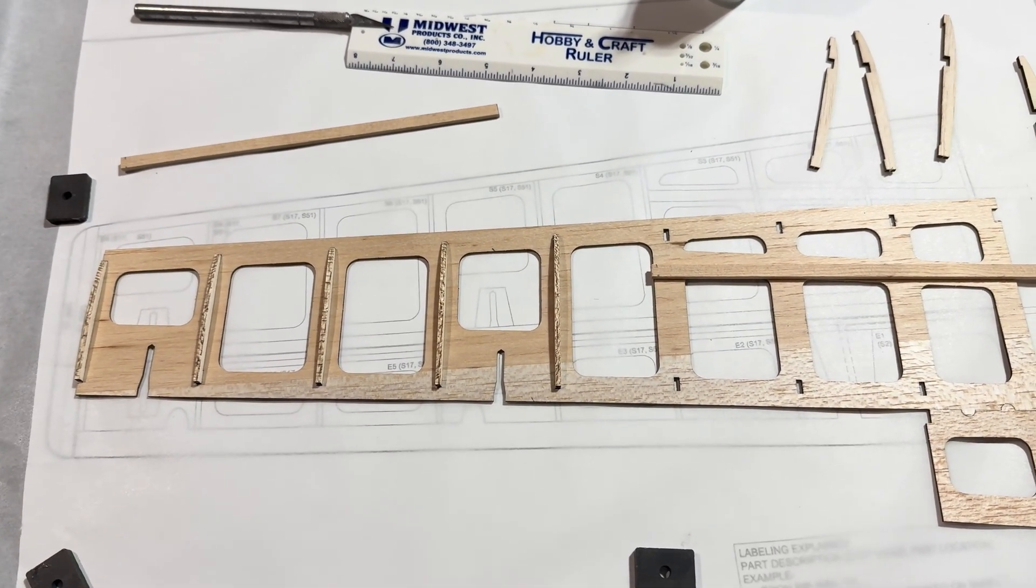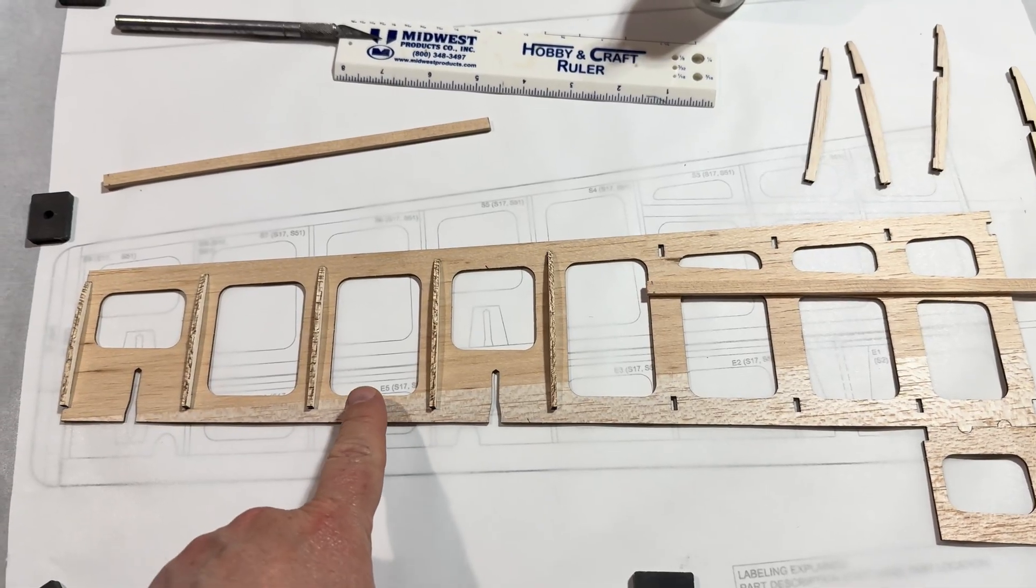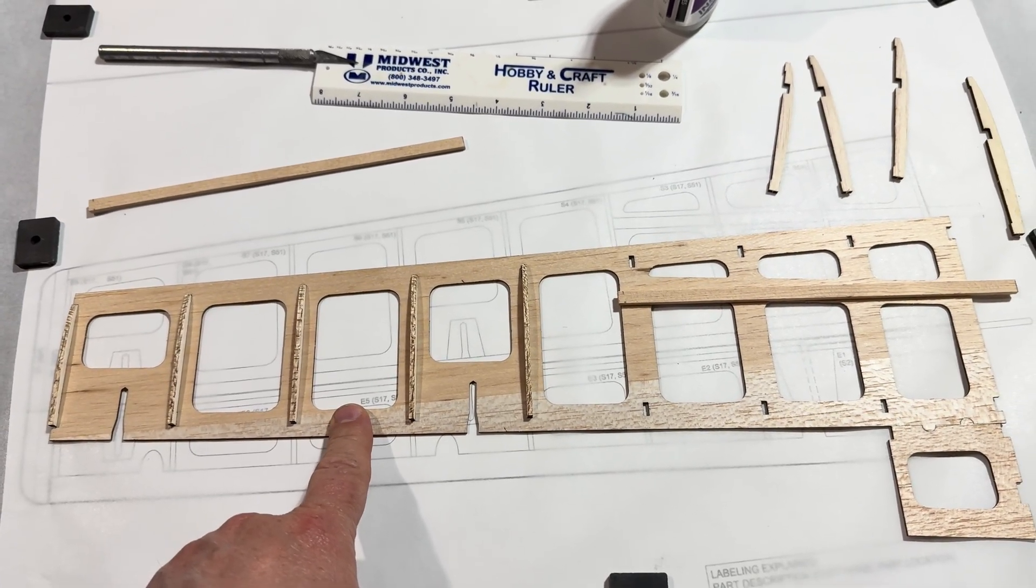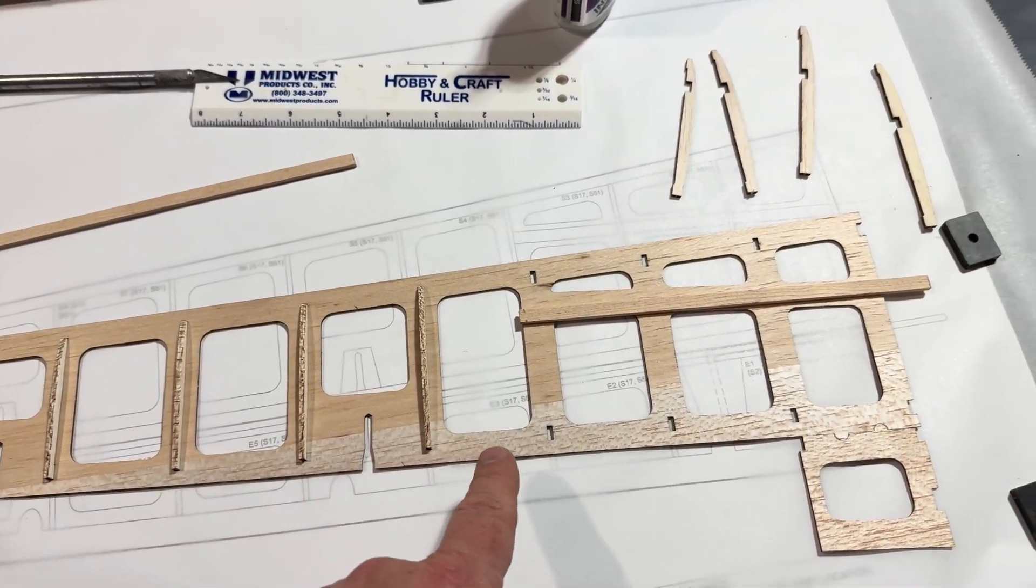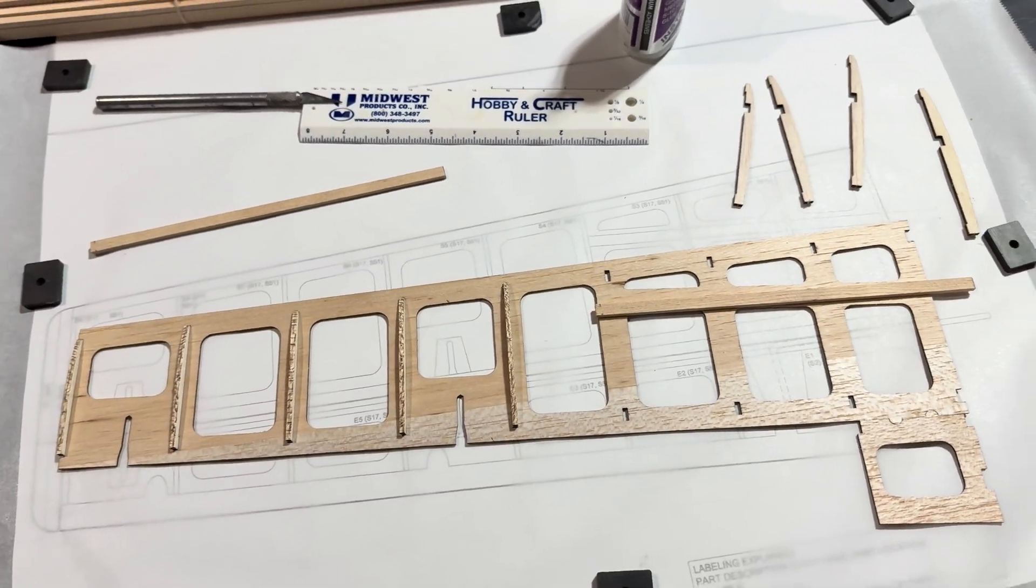This build is actually very quick. You have a 1/16th inch sheet of balsa and the ribs just drop right into these slots. So this should be a pretty fast build.